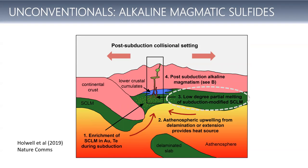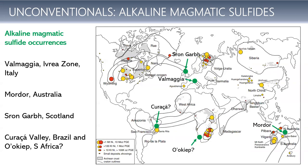Let's look at the products of melting of some really low-degree but metasomatized sources. The place to look at these is in the sort of post-collisional alkaline magmatic system. We did a bit of work a few years ago on this, looking at some samples from La Maria. I would say these are a little bit unconventional because they're formed in sort of post-collisional alkaline settings, which we don't usually see as being particularly prospective. These are relatively small occurrences, but they have some PGE in them, and they're definitely in collisional belts.